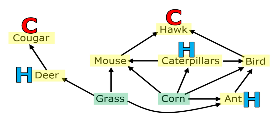We have carnivores that eat only meat or other consumers. The cougars and hawks are carnivores. And we also have omnivores. Omnivores eat plants and other animals.